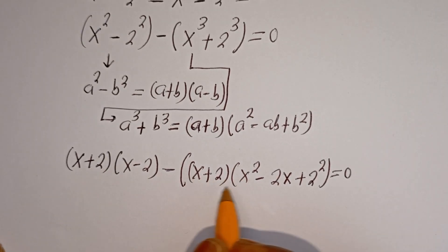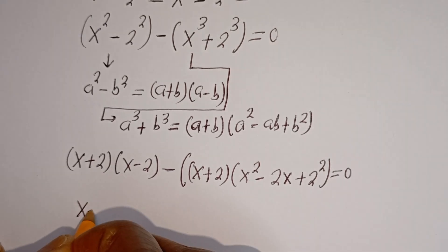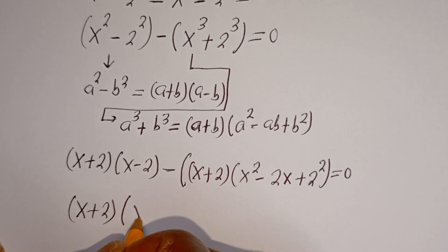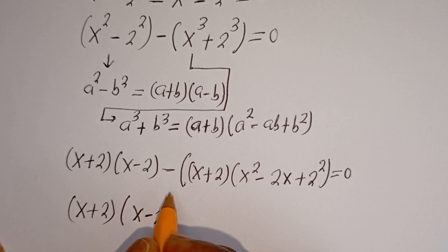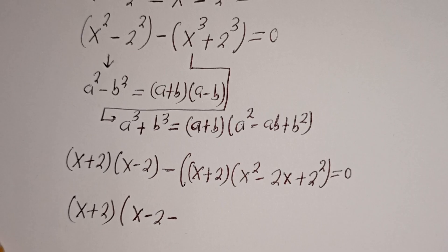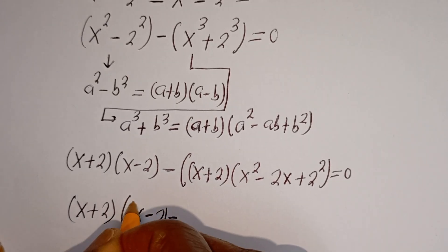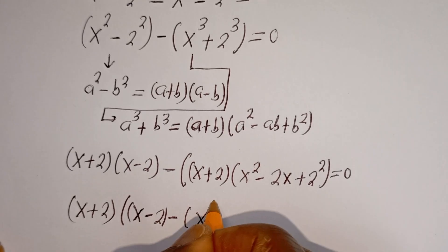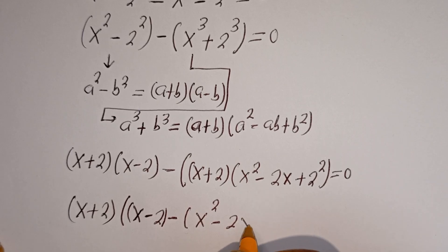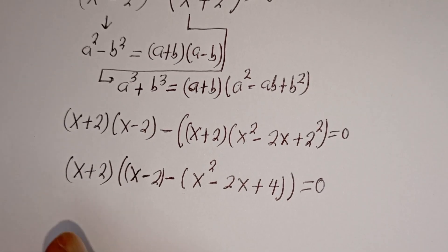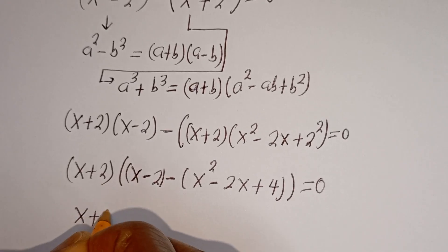Now here S plus 2 is common. Let's bring it out. We have (S plus 2) bracket. If you divide the first part by (S plus 2) we have S minus 2. Then minus, if you divide the second part by (S plus 2) we have S squared minus 2S plus 2 squared, that is 4, is equal to 0.